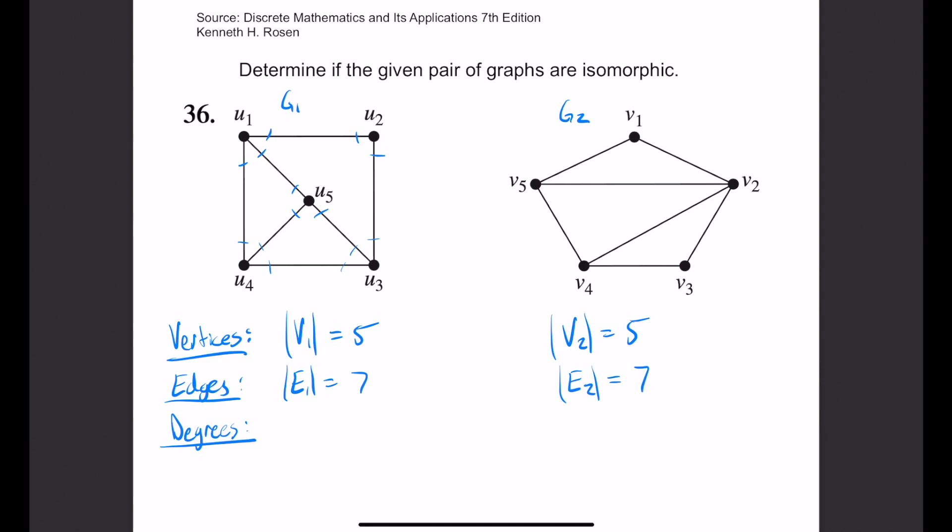So the degree of u2 equals 2. The degree of ux equals 3, where x is 3, 4, 5, and 1.